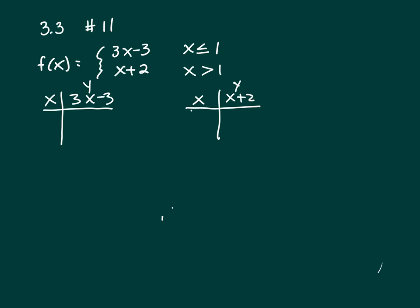Let's find some ordered pairs on each of these graphs. So the first graph, 3x minus 3, that's y equals. x is less than or equal to 1.